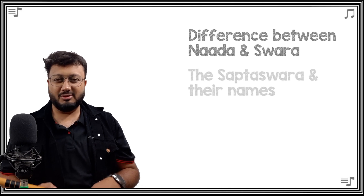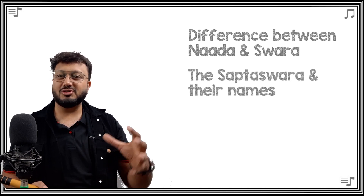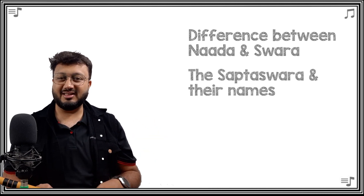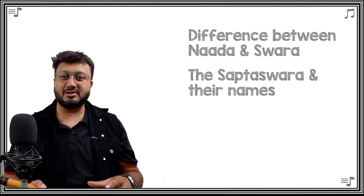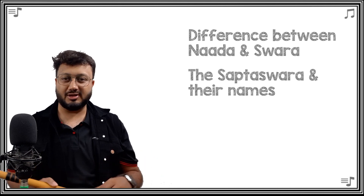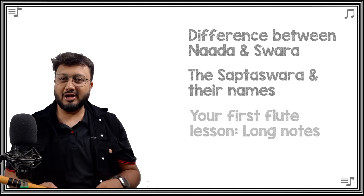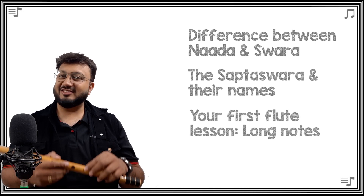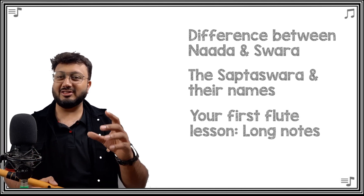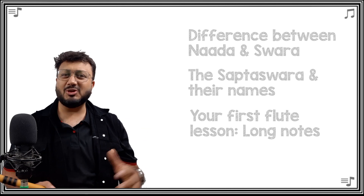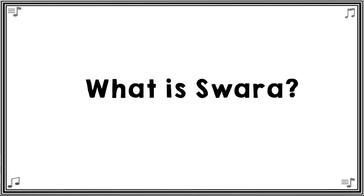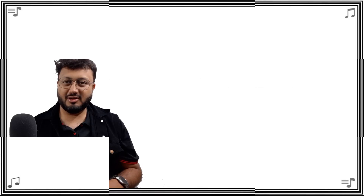In today's video we will be learning the difference between sound or nada and musical note or swara. We will also be learning the seven musical notes and their names — the sapta swara. This forms an introduction to the theory of Indian classical music. We'll also be learning to play the notes on the flute and the first flute exercise, so let's jump to it.